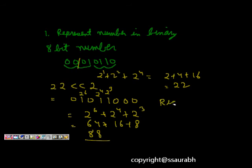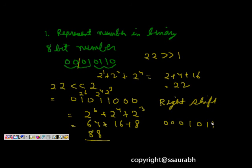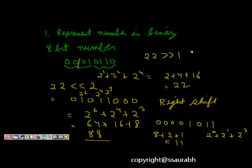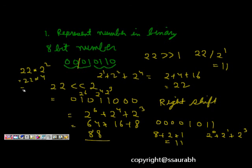This is the left shift. Similarly, right shift is the opposite. If we do 22 >> 1, the bits are shifted right and a 0 is added on the left. The result is 00001011, which equals 2^0 + 2^1 + 2^3 = 1 + 2 + 8 = 11. Right shifting by some number divides the value: 22 / 2^1 = 11. Left shifting multiplies: 22 * 2^2 = 22 * 4 = 88.